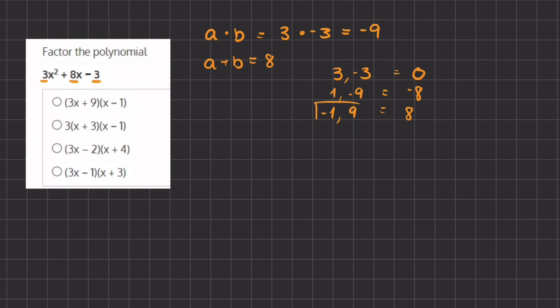Therefore these two numbers will be the numbers that we break up this middle term in our polynomial. So it's going to look like this: we're going to have 3x² - x + 9x - 3.